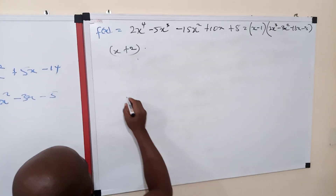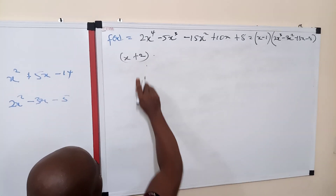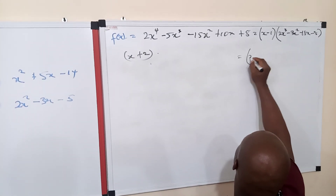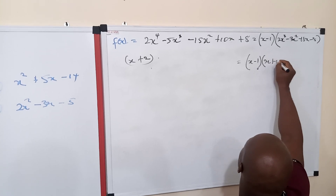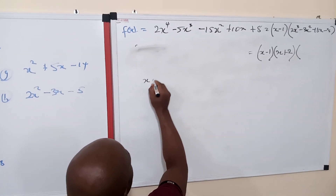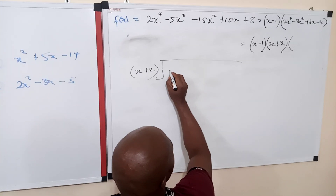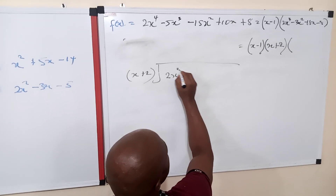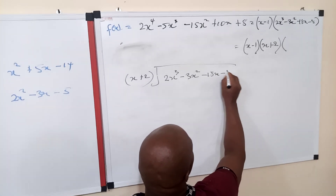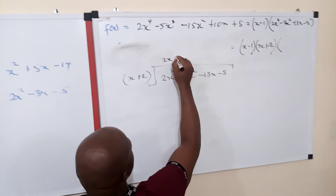Because we are able to render that entire system to zero when evaluating at negative 2, x plus 2 is also a factor. So let's go through long division to reduce that order by 1 again. We now have x minus 1 times x plus 2 times this other part which we don't know yet. So dividing x plus 2 into 2x³ minus 3x² minus 18x minus 8.